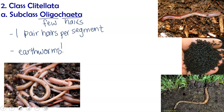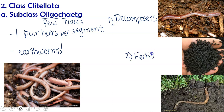A few reasons that earthworms are important for the environment: first, they are decomposers. Second, they can help fertilize the soil — there are actually people who farm worms specifically to get their waste, called castings, as fertilizer. Lastly, they can also help aerate the soil. As they tunnel through it, they create holes which allow more water and air into the soil, which is better for plant roots and other organisms that live there.